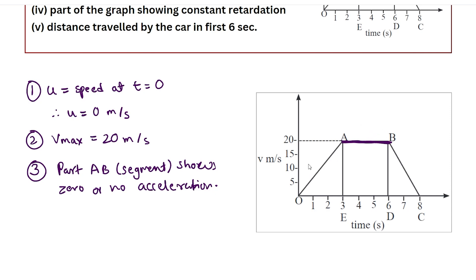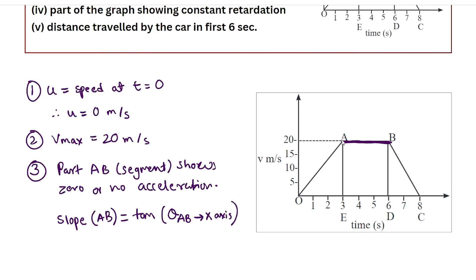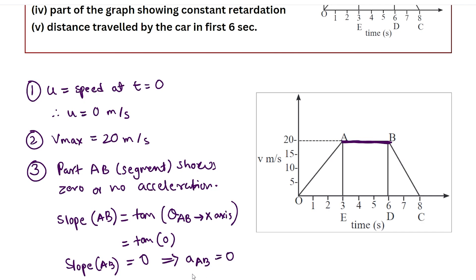Another, more methodical way to confirm this is to find the section of the graph whose slope is zero. The slope of AB equals tan of the angle between AB and the horizontal axis. Since line AB is parallel to the time axis, that angle is zero, and tan of zero is zero. So the slope of part AB is zero, which confirms that acceleration at AB is zero.